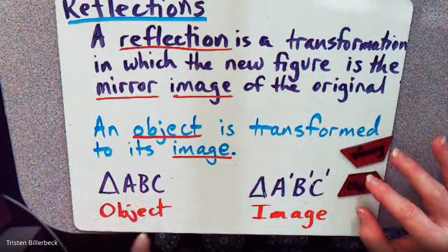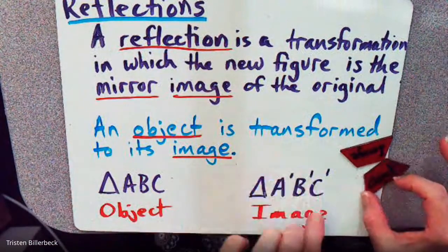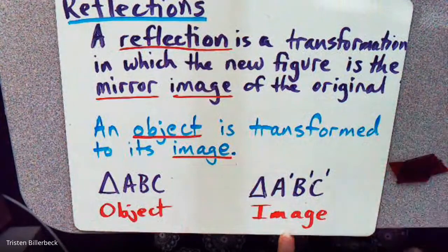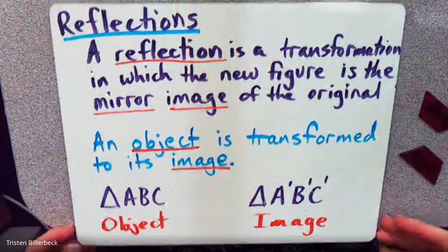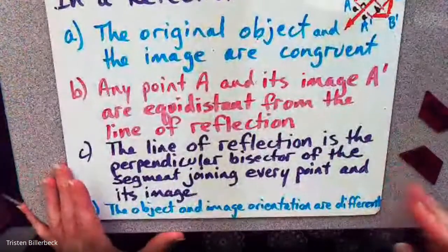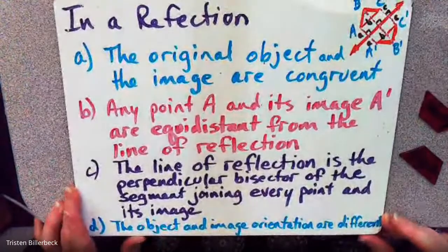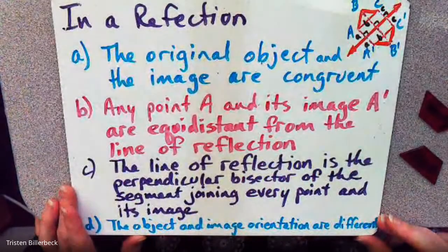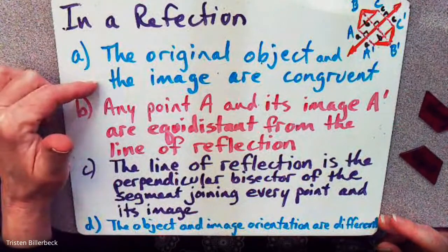So if I had a triangle ABC as an object, then triangle A prime, B prime, C prime would be the image. The original object and the image are congruent.